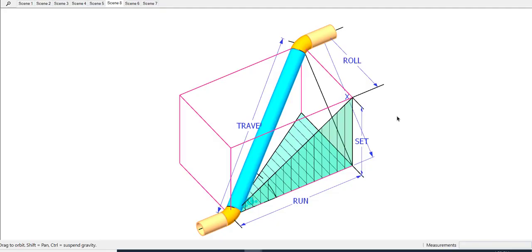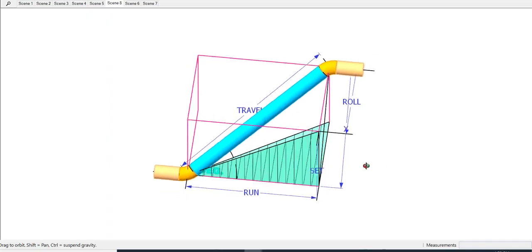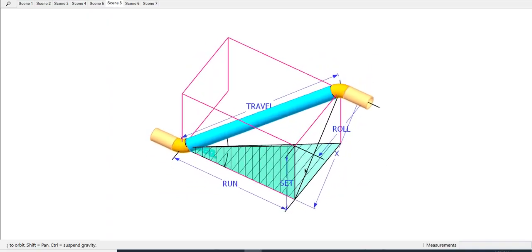In the drawing of an offset, the run, set, and roll measurements are usually given. The first thing to do is to calculate the value of the X.